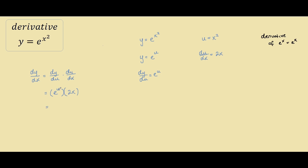Our last step is to replace u with x squared because we want everything in terms of x. So we have e to the x squared times 2x, and that is our answer to the derivative.